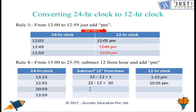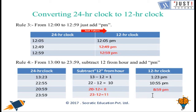So for afternoon times we subtract 12. For example, 20:59 — subtracting 12 from 20 gives 8, written as 8:59 pm. For 23:59, subtracting 12 from 23 gives 11, so it is written as 11:59 pm.